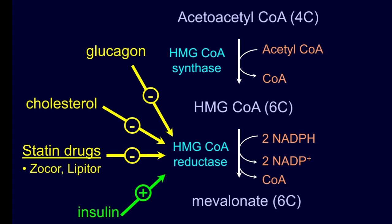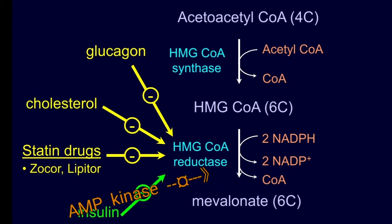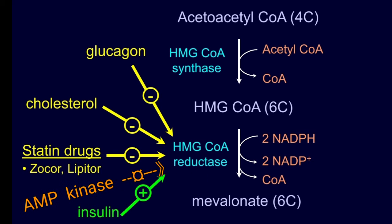HMG CoA reductase can also be specifically phosphorylated and inhibited by the protein kinase AMP kinase, which results in inhibition of the enzyme.